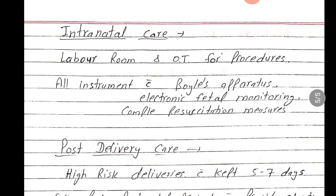Intra-natal care: labor room and OT for procedures. Well-equipped labor room and operation theatre. Procedures that can be conducted: forceps delivery, manual removal of placenta, caesarean section, MTP, tubal sterilization or other gynaecological operations. Instruments available: Boyle's apparatus, anaesthesia machine, electronic fetal monitor, and complete resuscitation equipment.